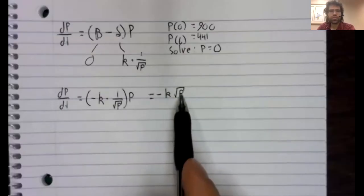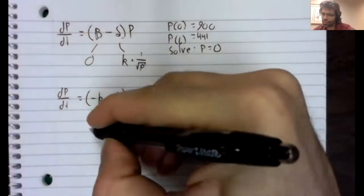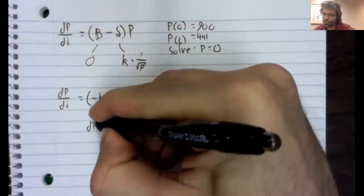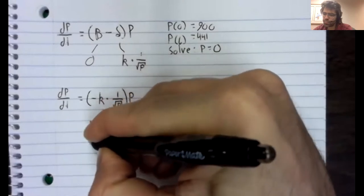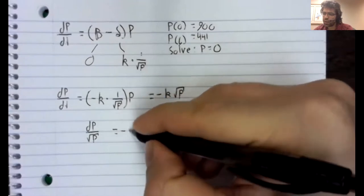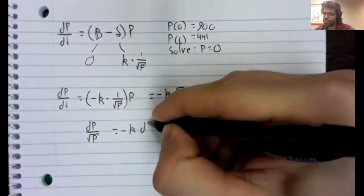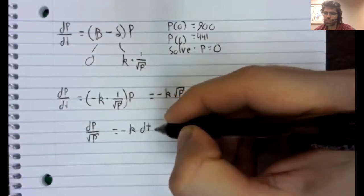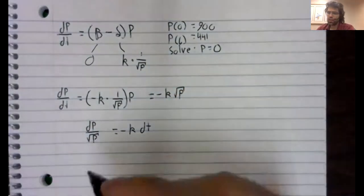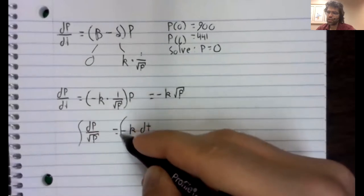Take the square root of P over to the left, multiply both sides by dt, and then integrate.